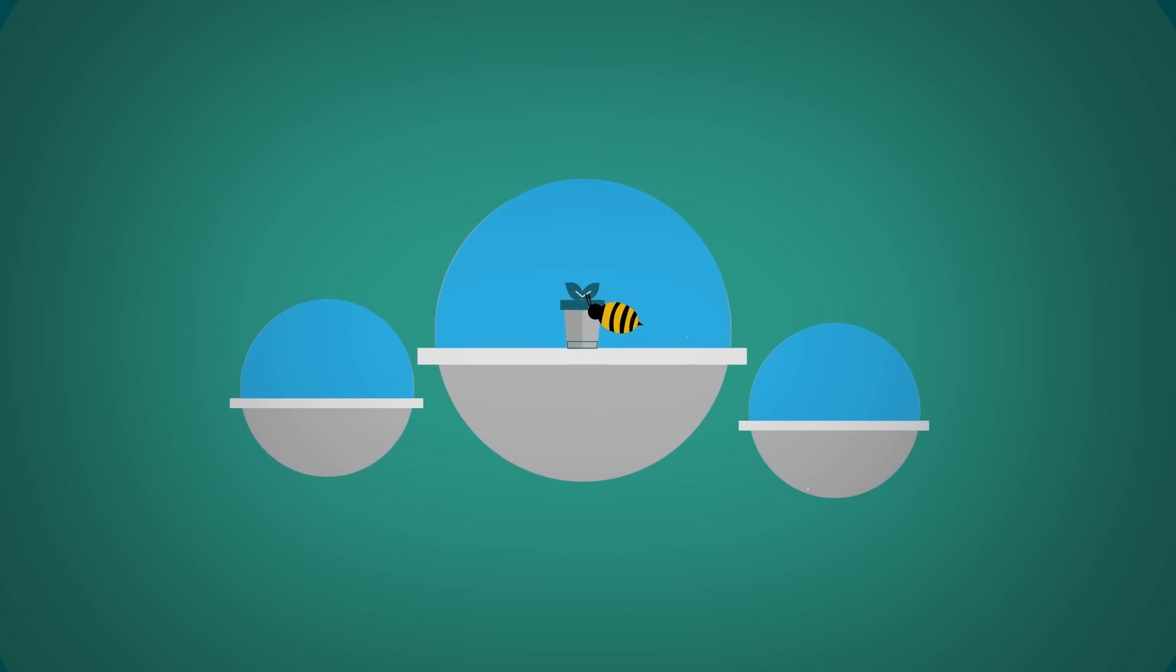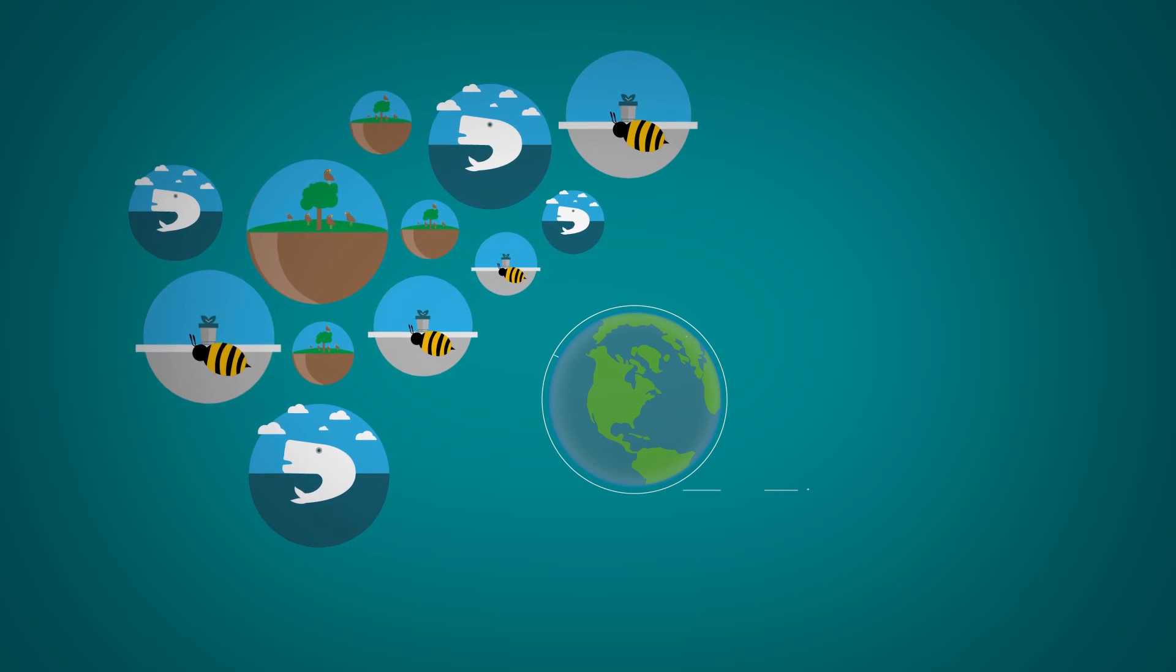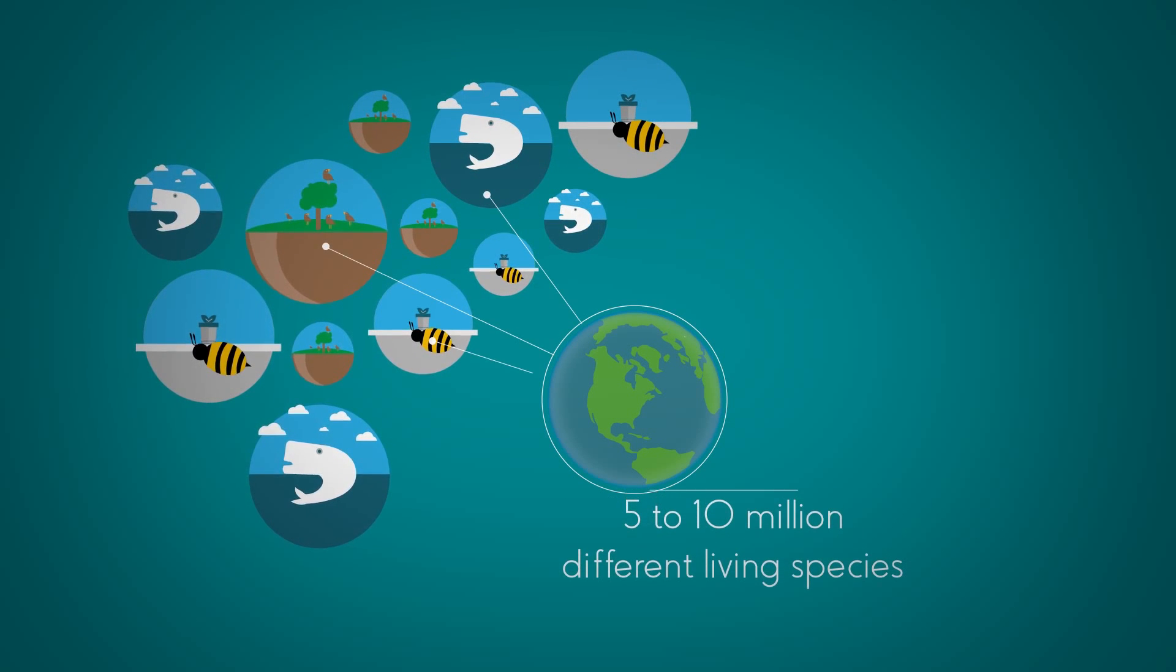Don't worry, I won't rhyme for the entire video. But the amazing diversity of life on planet Earth is truly staggering. There are estimated to be between 5 to 10 million different living species on the Earth. And that's excluding all the bacteria, as they are really hard to count. So what do they all have in common? What makes something a living thing?